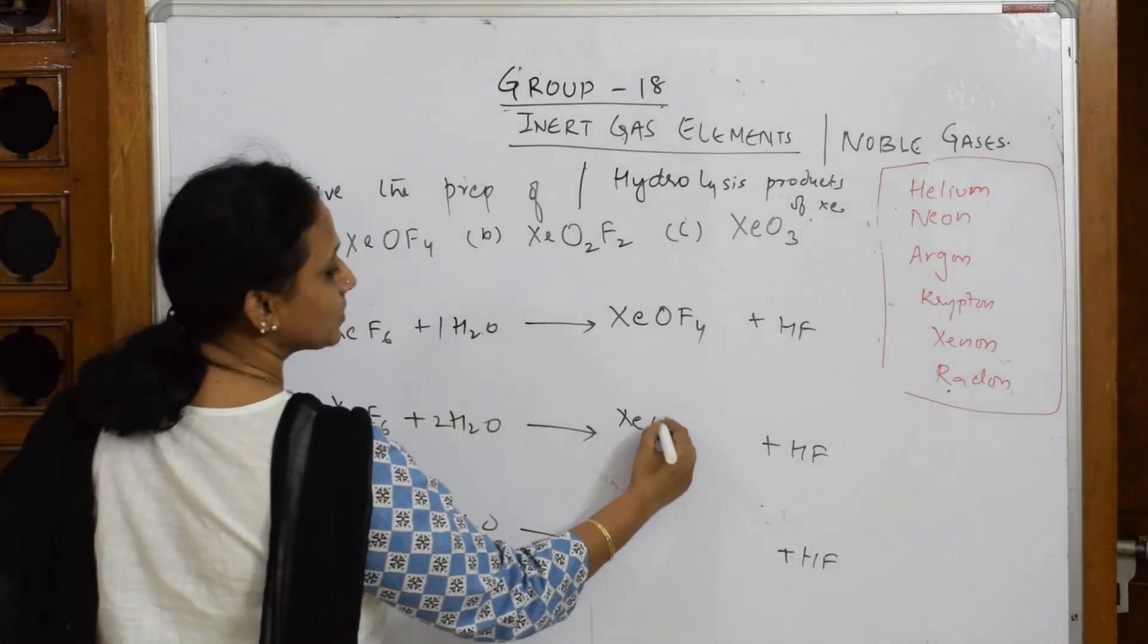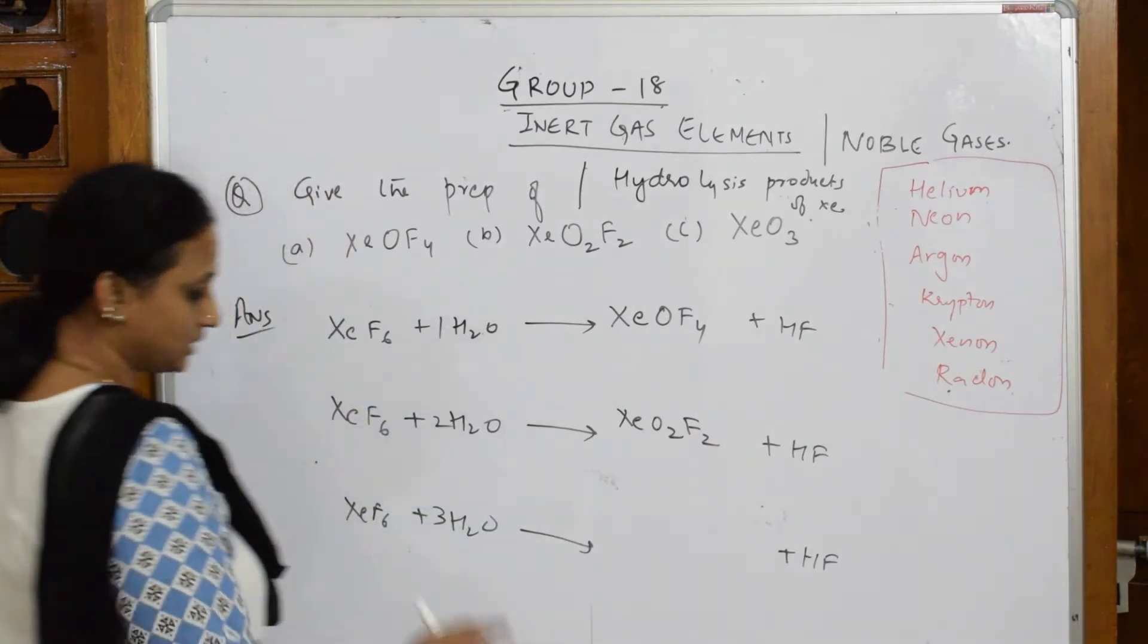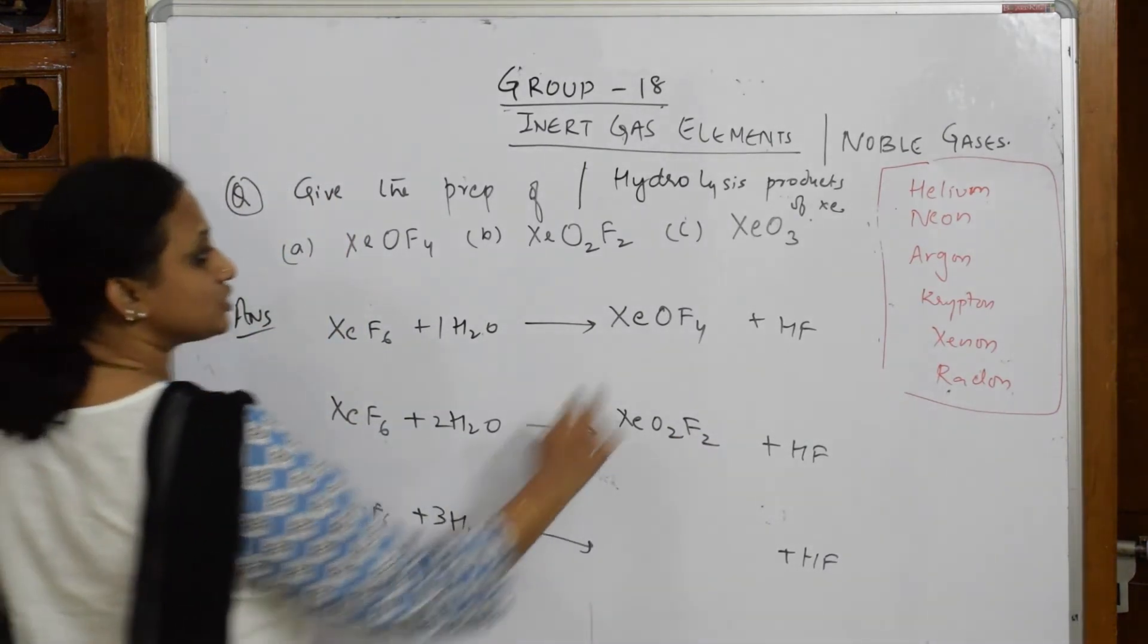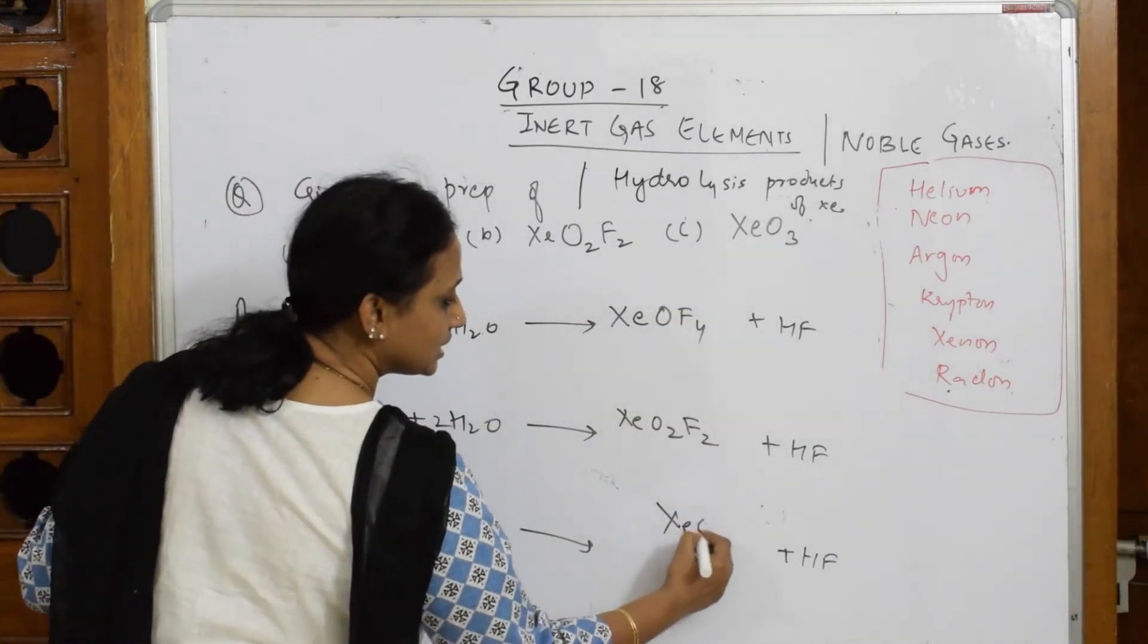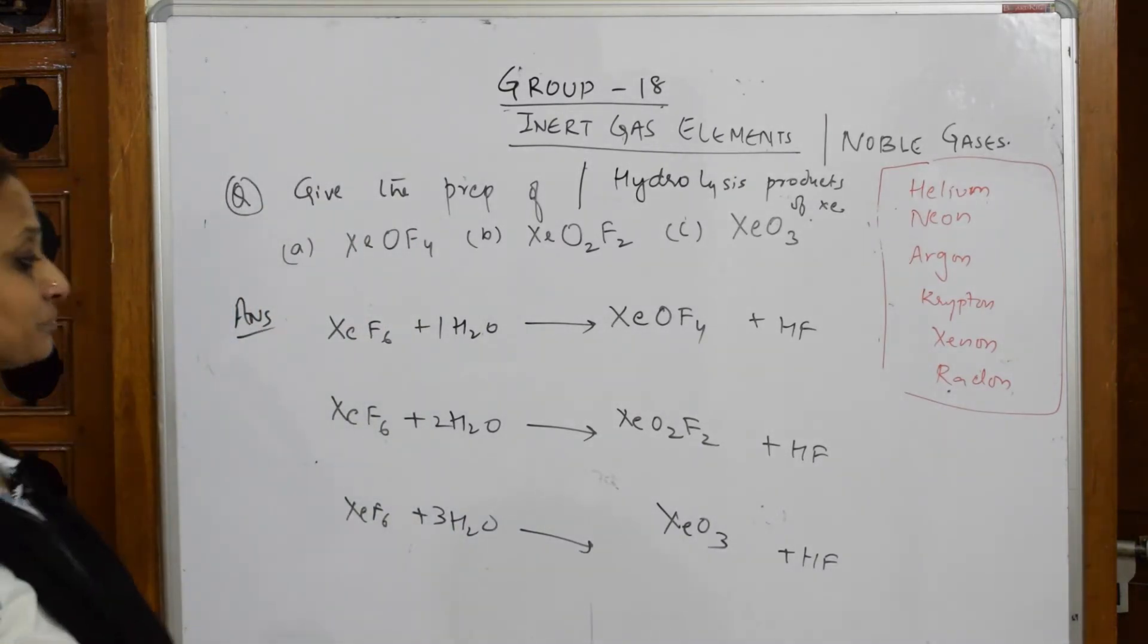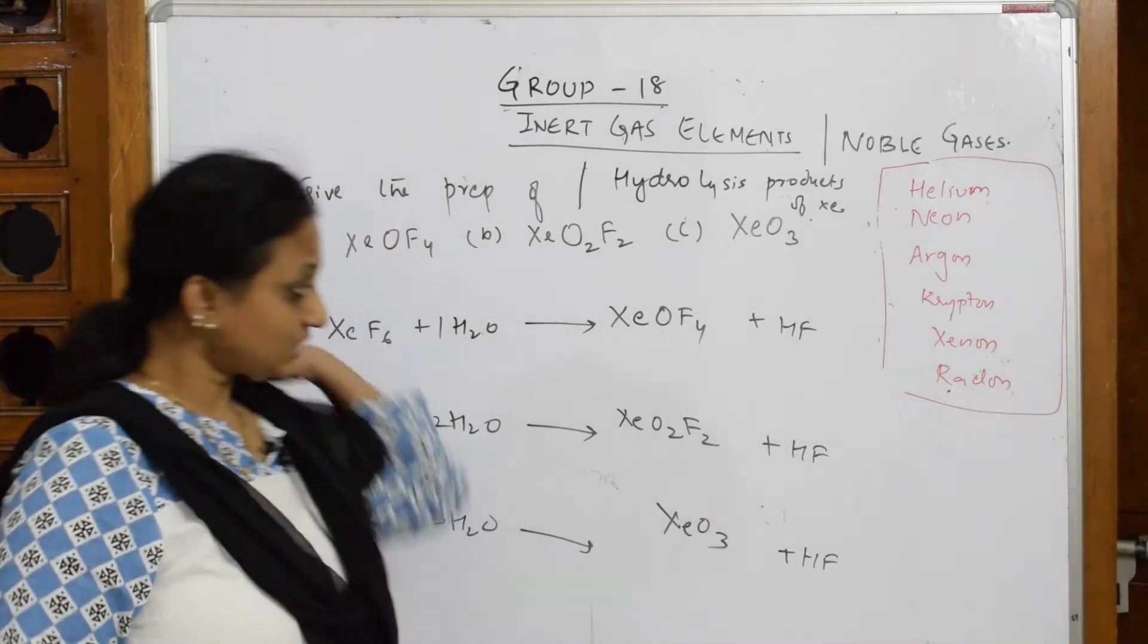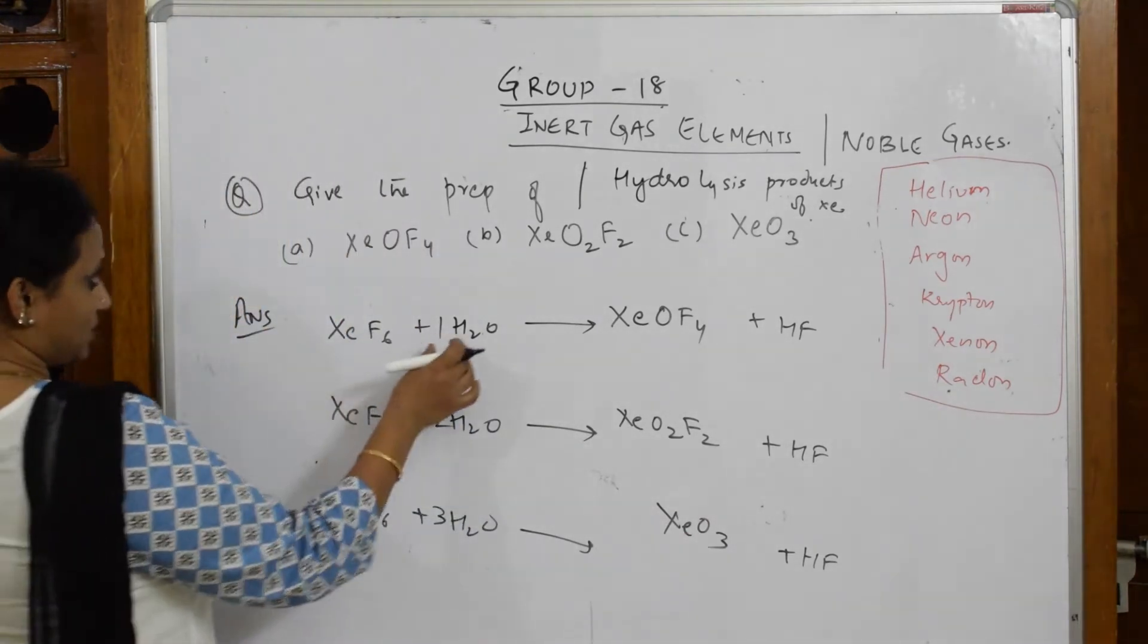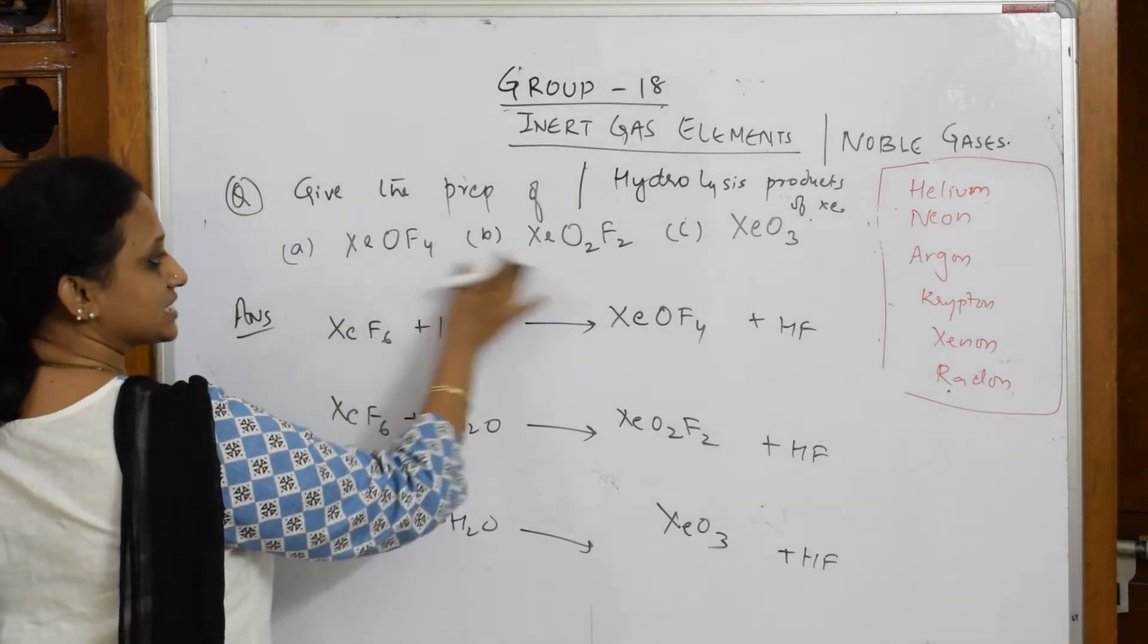When you take two moles, the product is XeO2F2. When you take three moles, the product is XeO3, xenon trioxide.